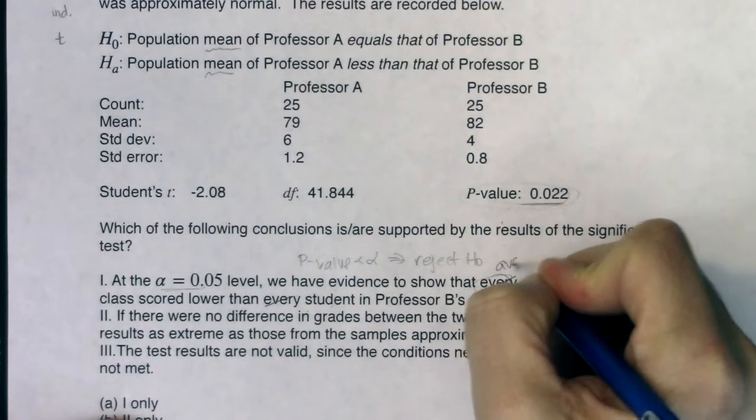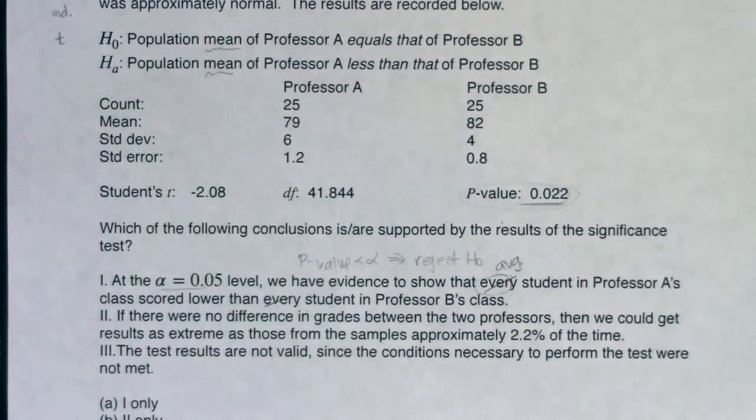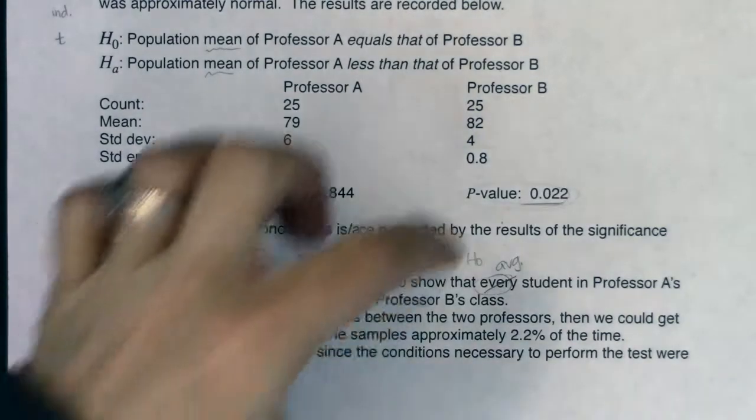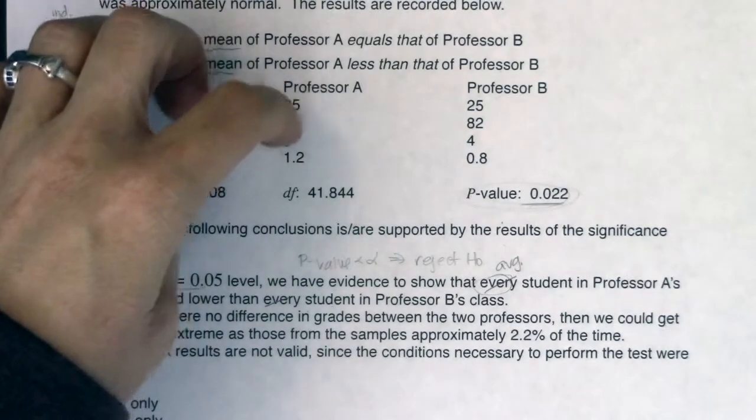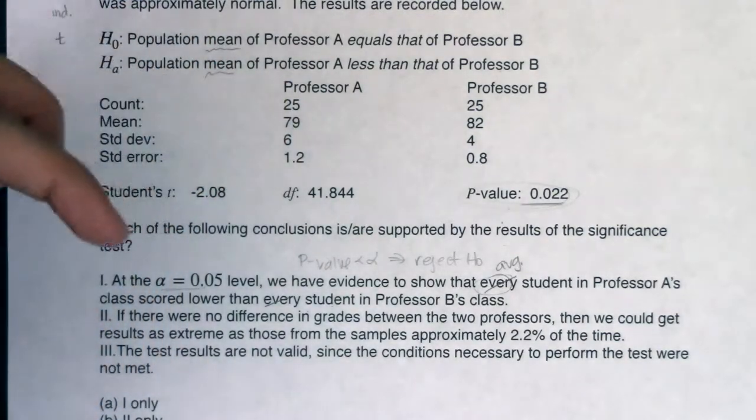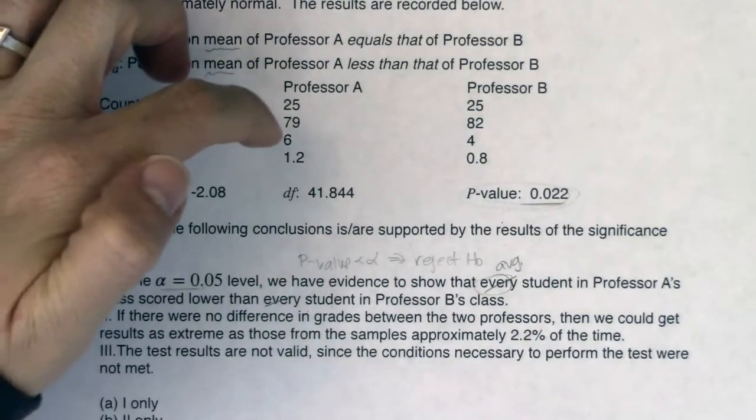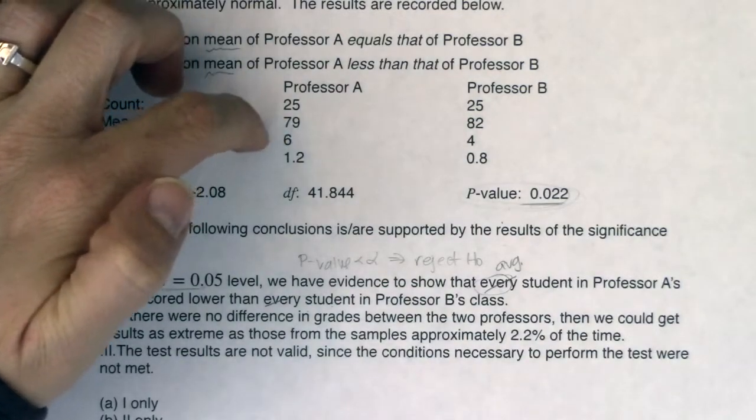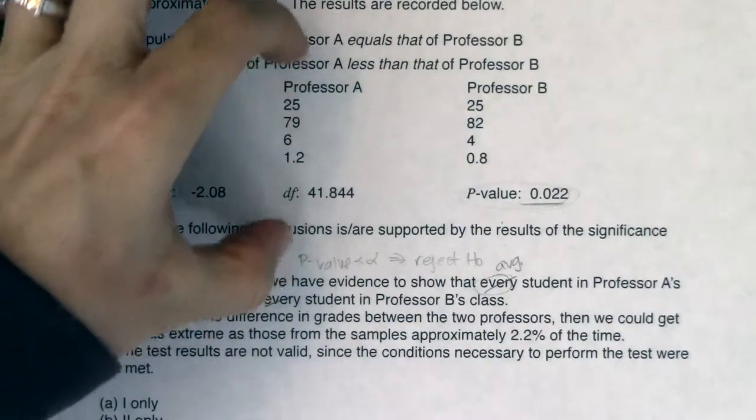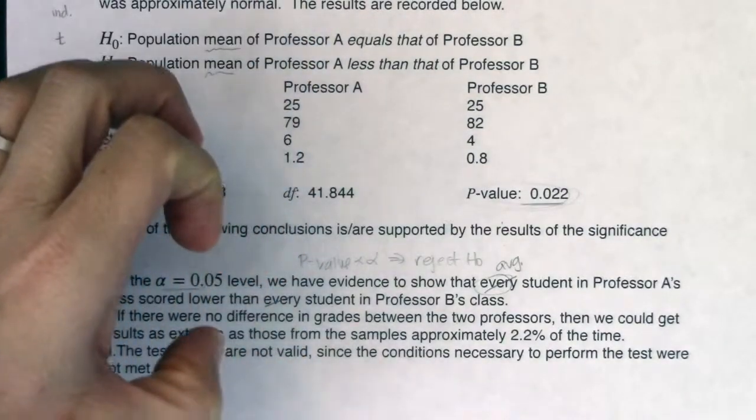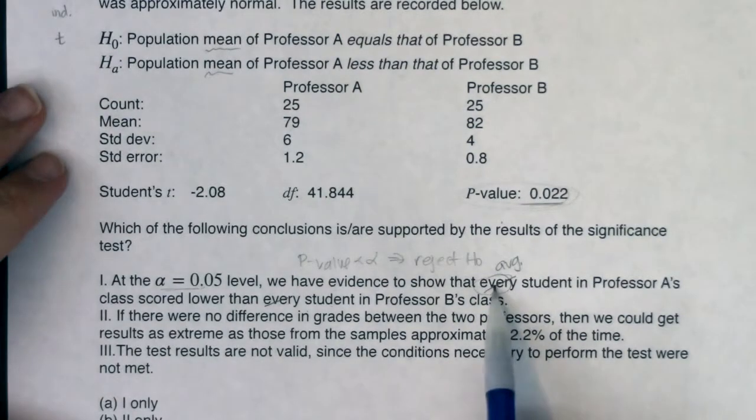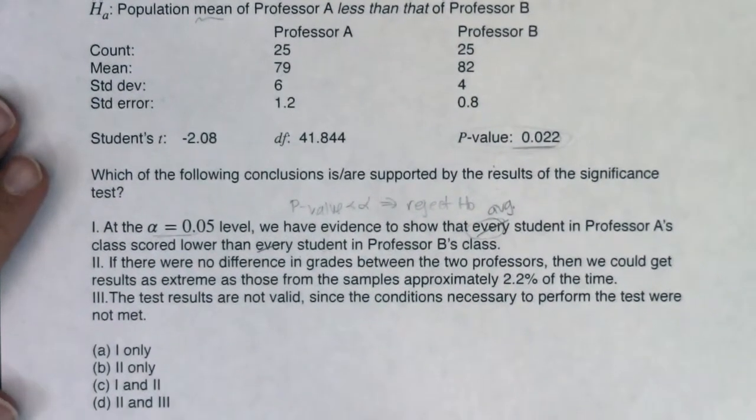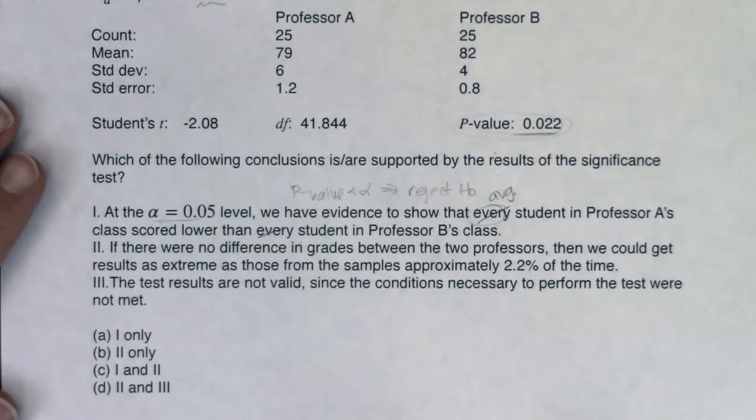The problem with that first sentence right here option I is the word every. If this had said average I would have been on board with this right and this one also would have had to say average. But it's very possible that one student over here scored better than some student here. But the average student in Professor A or I think I said that backwards excuse me. There's it's possible that one student from Professor A's class outscored somebody in Professor B. But the average Professor A score was lower than the average Professor B score. So again it's this word every that's messing it up.